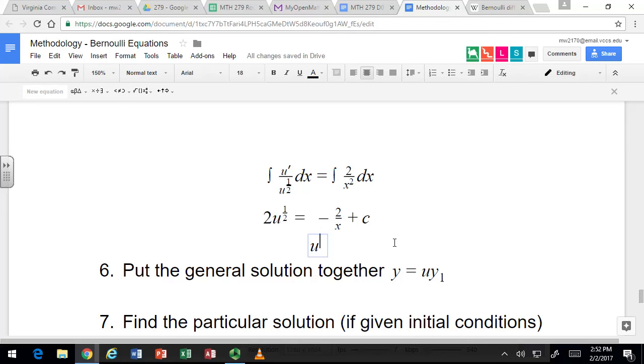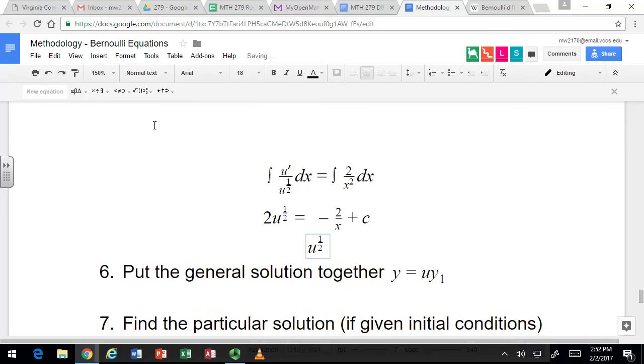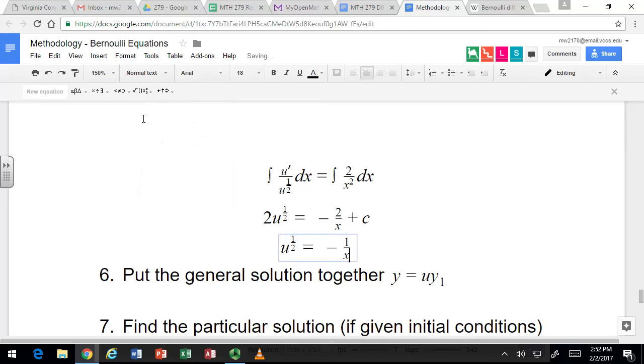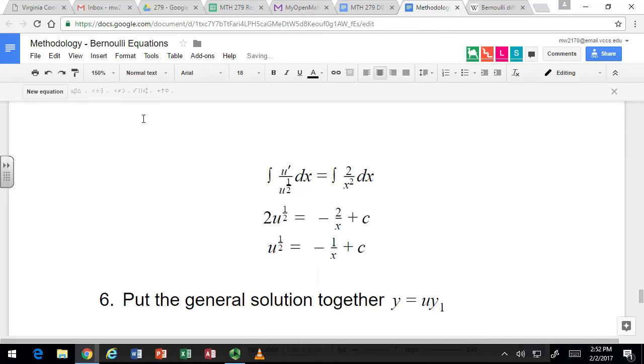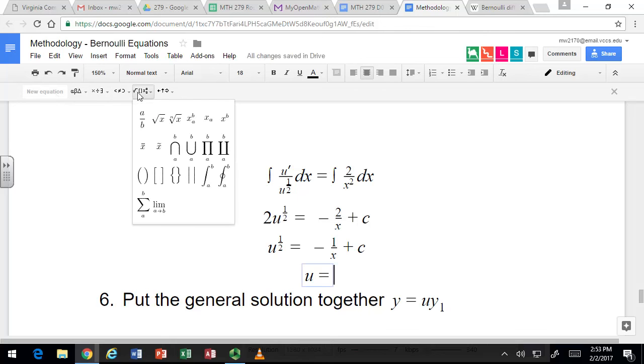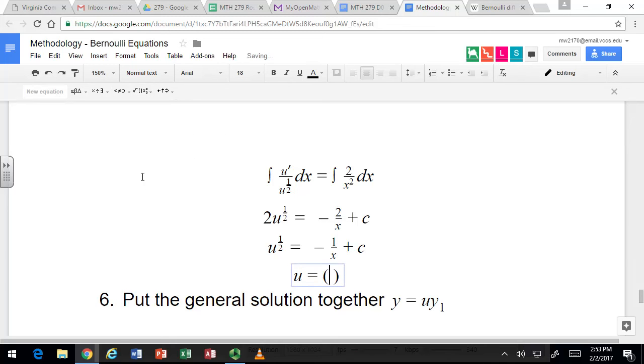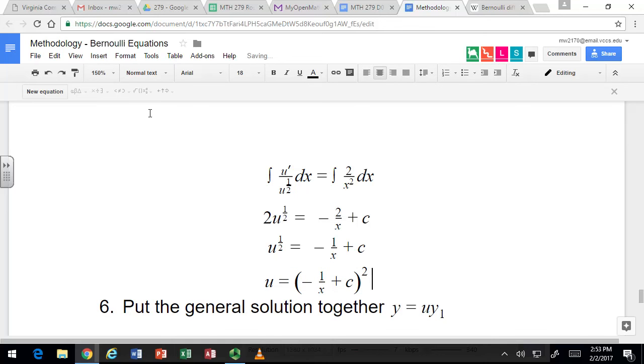So we still have u to the 1/2, just dividing by 2. This will now just be negative 1 over x, because that 2 is gone. And then c over 2 is still c, so we'll let that c absorb that 2. How do we get rid of an exponent of 1/2? Exponent of 1/2 is the square root, so a reciprocal exponent would be 2. So u equals this whole thing squared.